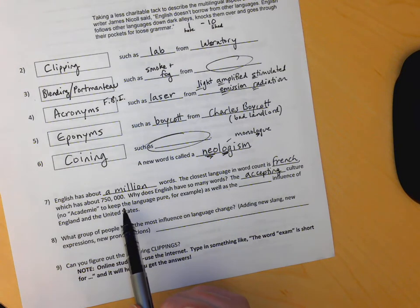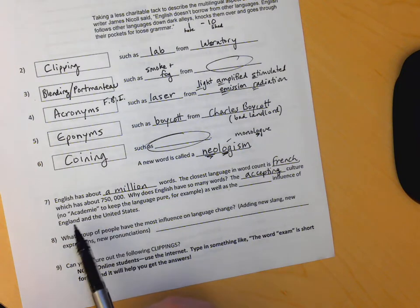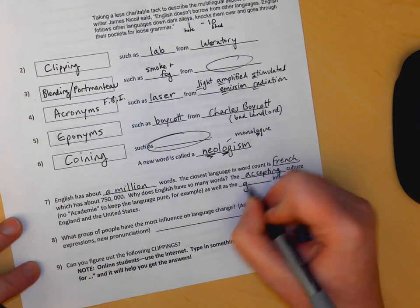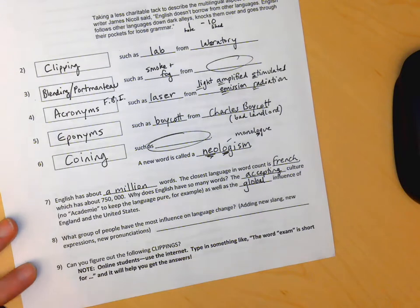And then when you think about the world superpowers that have had such an influence on language, the last two main world superpowers have been England and the United States. The sun never set on the British Empire. We got words from all over the place. So for this blank put global influence of England and the U.S.